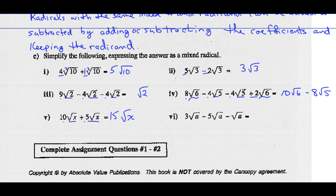And finally, example 6: radical a, another radical a, another radical a. So we keep radical a and add or subtract the coefficients: 3 minus 5 is negative 2, minus 1 more is minus 3 radical a.